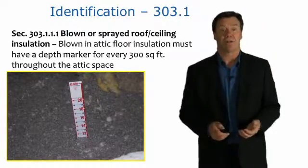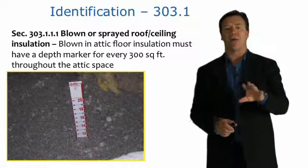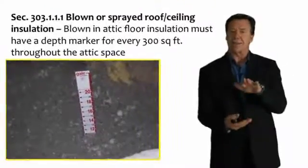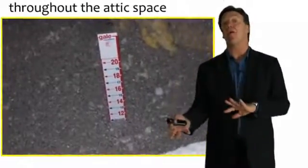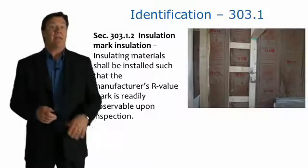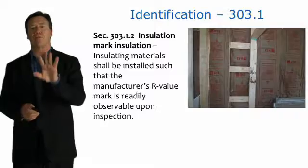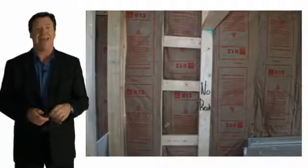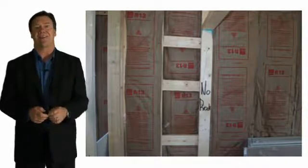With regard to blown insulation, not only do you have to have that certificate, but you also have to have a depth marker every 300 square feet throughout the attic space to make sure that the insulation is at its proper depth. The marker actually shows the inches and the R-value of the insulation right on it. Additionally, insulation materials themselves must be marked, so you can plainly read the manufacturer's R-value of that insulation.